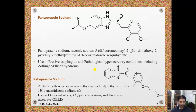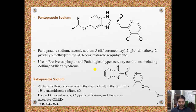Rabeprazole sodium is also a racemic mixture and its IUPAC name is 2-[4-(3-methoxypropoxy)-3-methyl-2-pyridylmethylsulfinyl]-1H-benzimidazole sodium salt. It is used in gastric ulcer, Helicobacter pylori eradication, and erosive or ulcerative GERD. In rabeprazole, you can also see the benzimidazole ring system, sulfonyl connection, and pyridyl side chain.